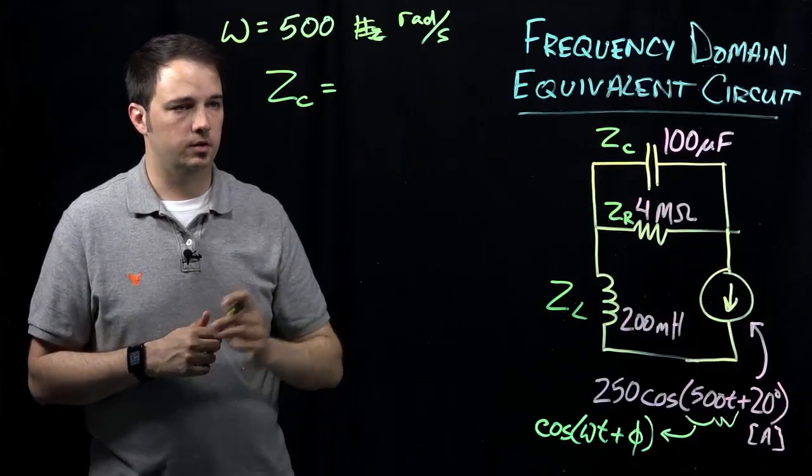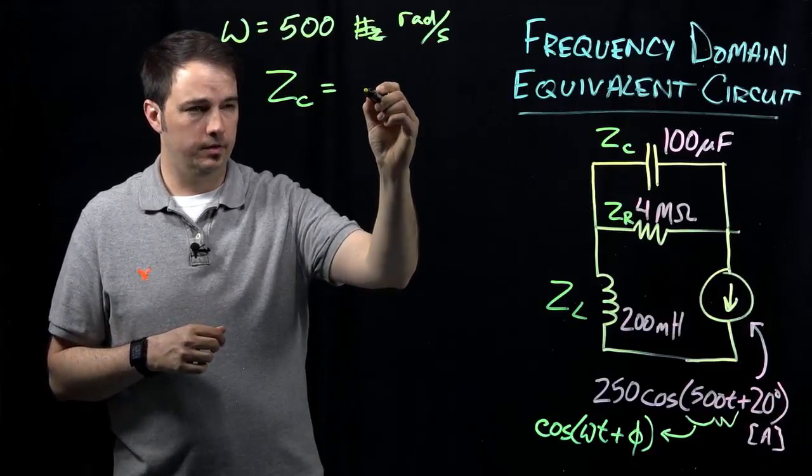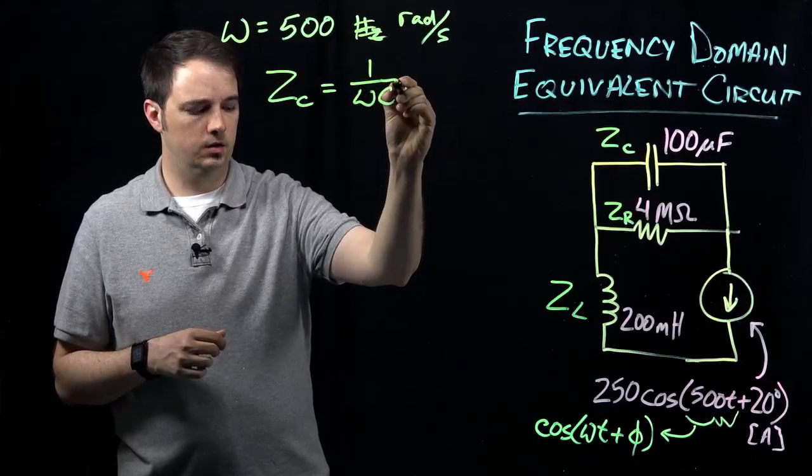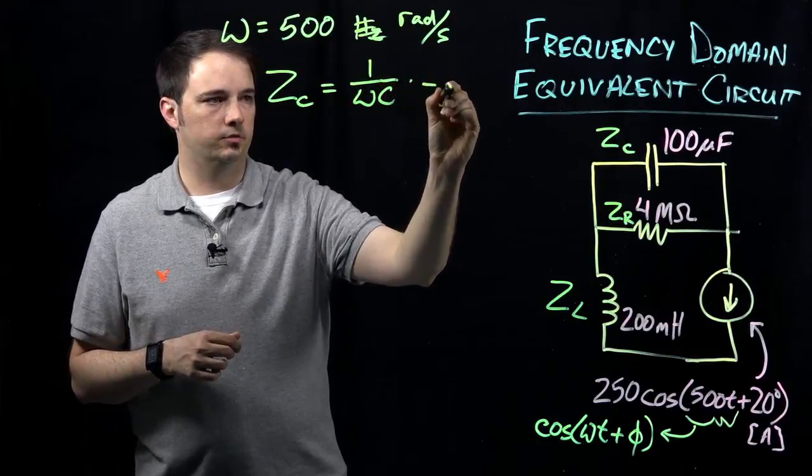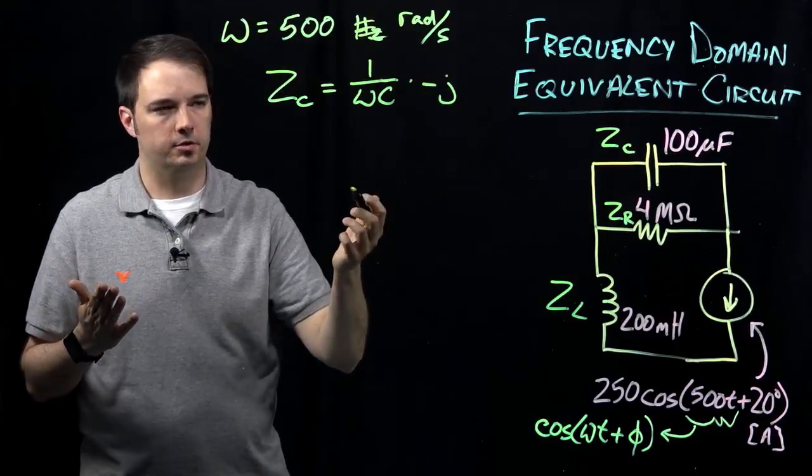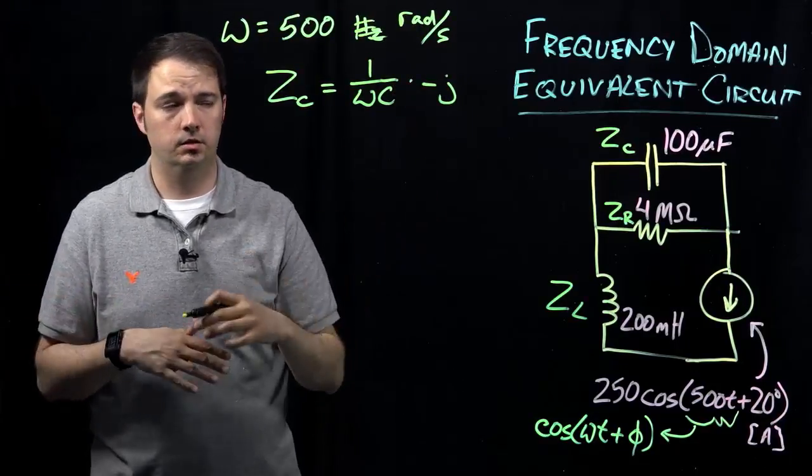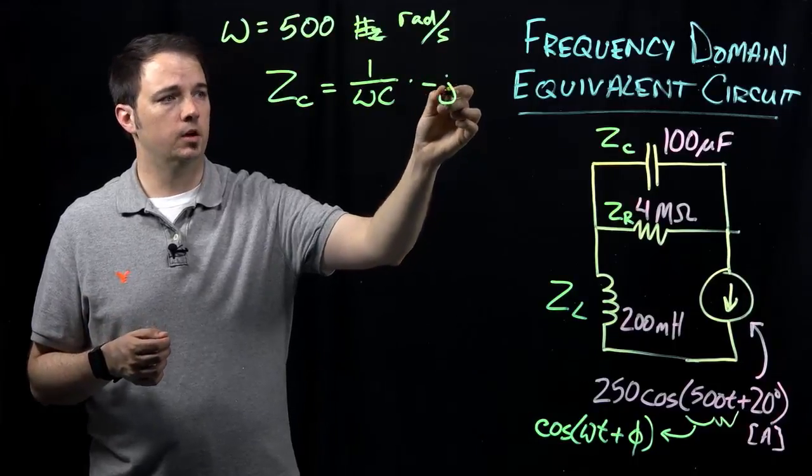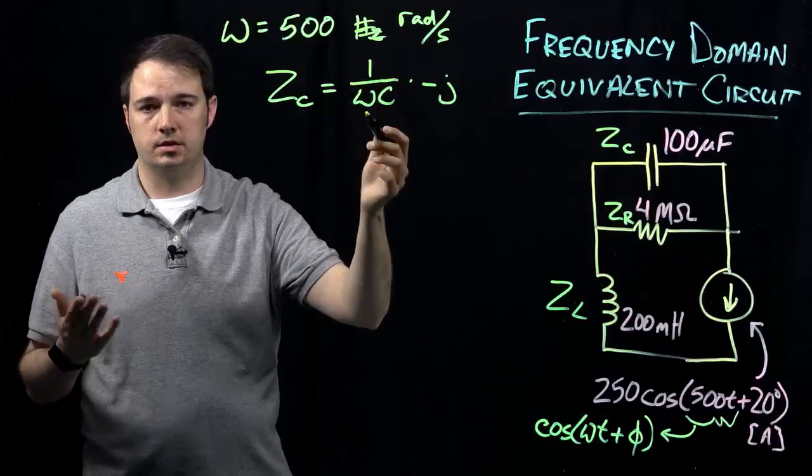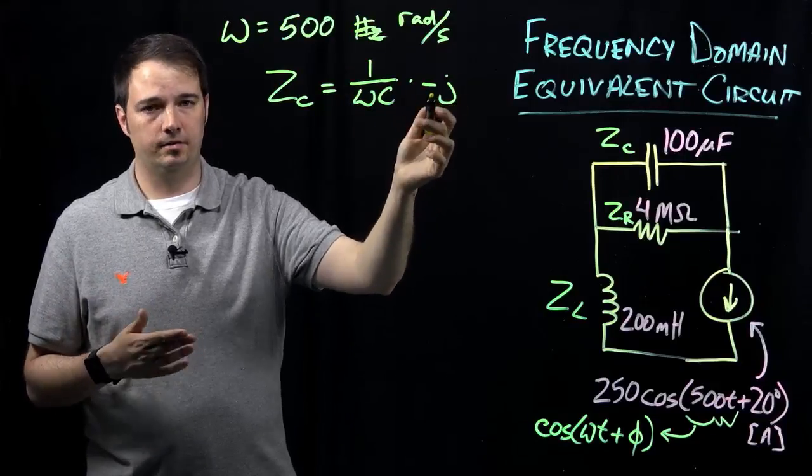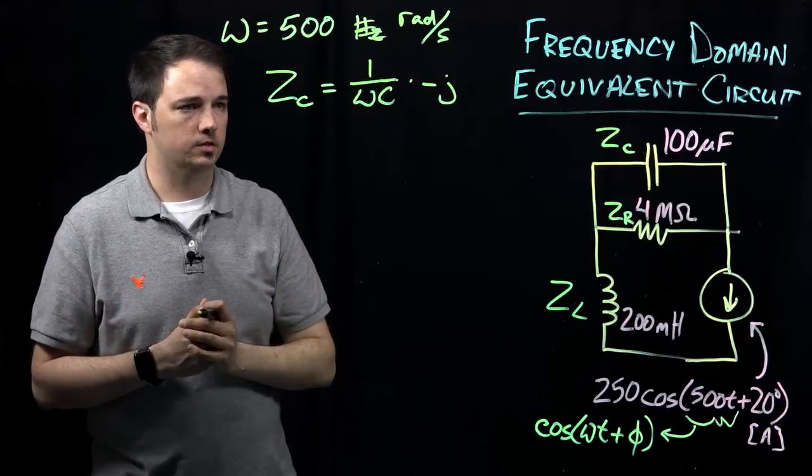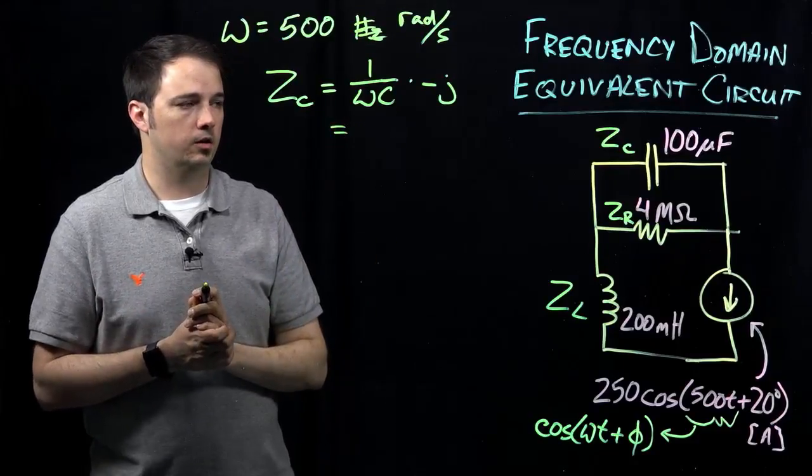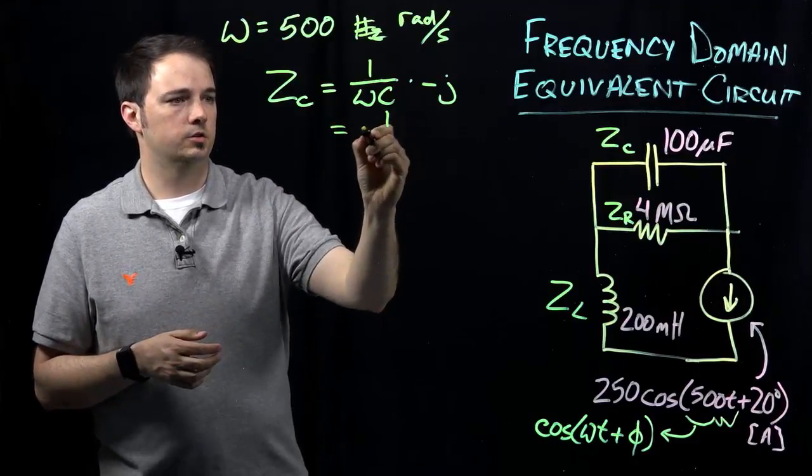So in the case of the capacitor, the impedance is indicated as 1 over omega C times negative J. You might also see this represented as just 1 over J omega C. It's the same thing because, again, remember J here is the imaginary term. So if I have J in the denominator, that's the same thing as just indicating a negative J in the numerator, more or less, in this case.